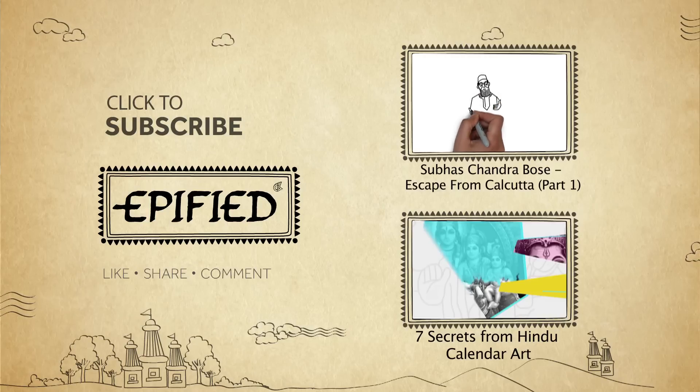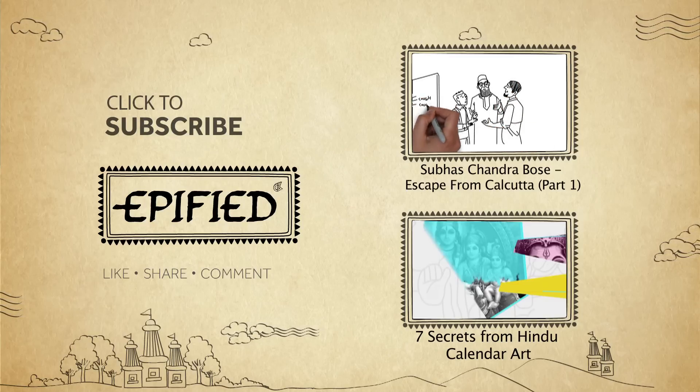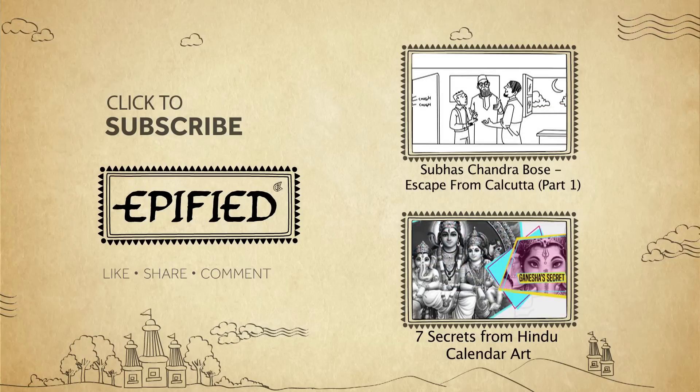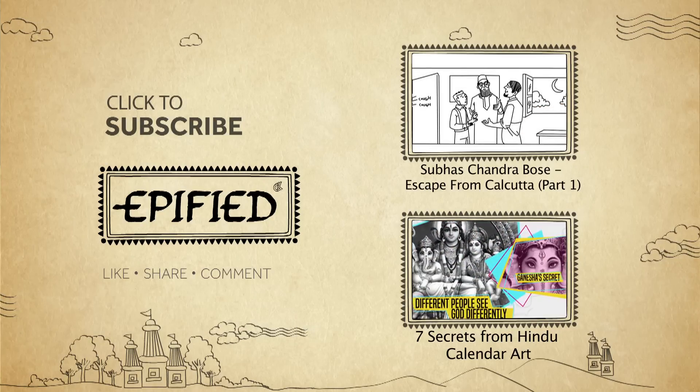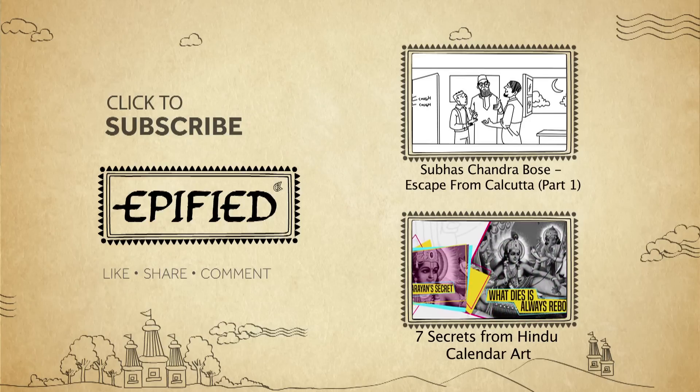Netaji finally decides to go through with the plan. In the dead of the cold Calcutta winter night, he waits in disguise with Shishir and a cousin. Suddenly, they hear a loud clearing of the throat from the top floor of the house. Ganesha, different people see God differently. Narayan, what dies is always reborn.